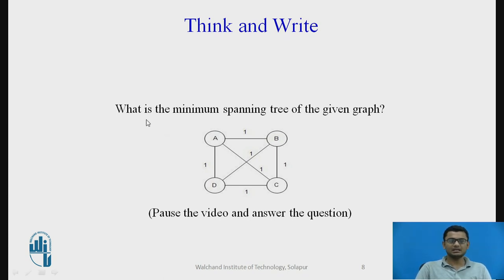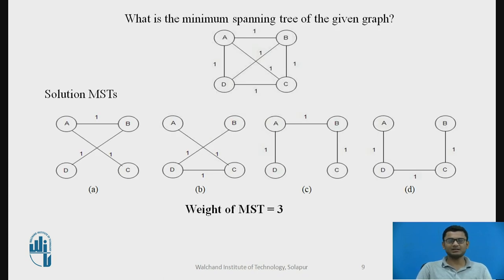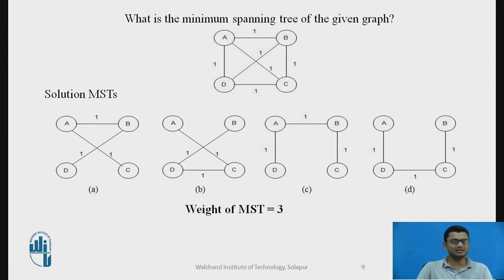What is the minimum spanning tree of the given graph? Pause the video and answer the question. If you have correctly attempted it — the graph has equal-weighted edges, meaning all edges are equal in weight. In this case the graph may have multiple minimum spanning trees all having the same weight. This is an important property: if a graph has equal-weighted edges, there may be multiple minimum spanning trees, but the weight of all of them will be equal.